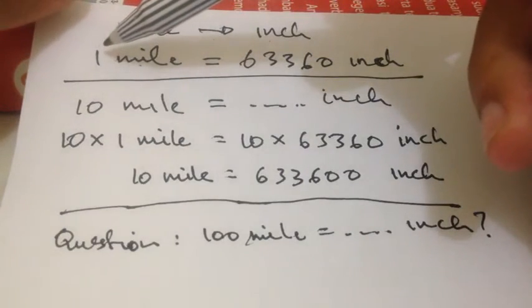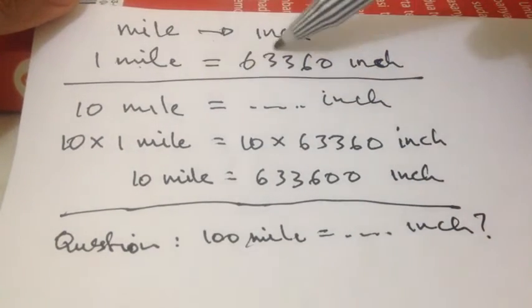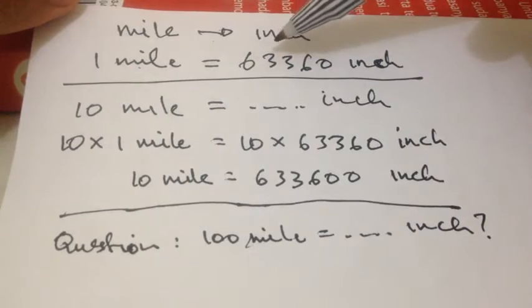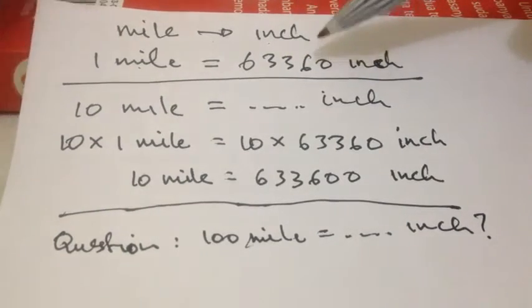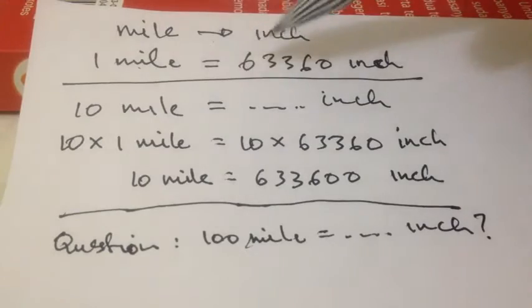The basic rule of this conversion is 1 mile is equal to 63,360 inches. That's the basic rule.